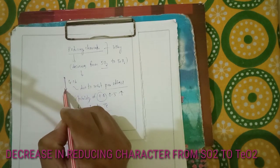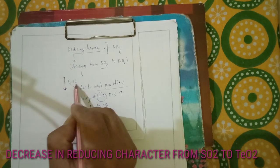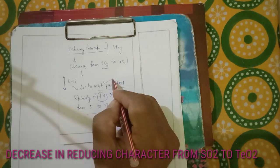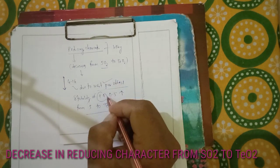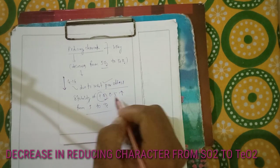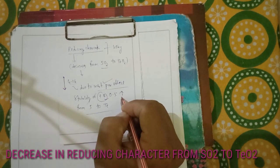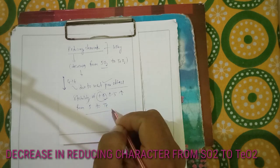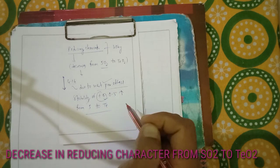On moving down group 16, due to the inert pair effect, the stability of the +4 oxidation state increases from sulfur to tellurium. Thank you.